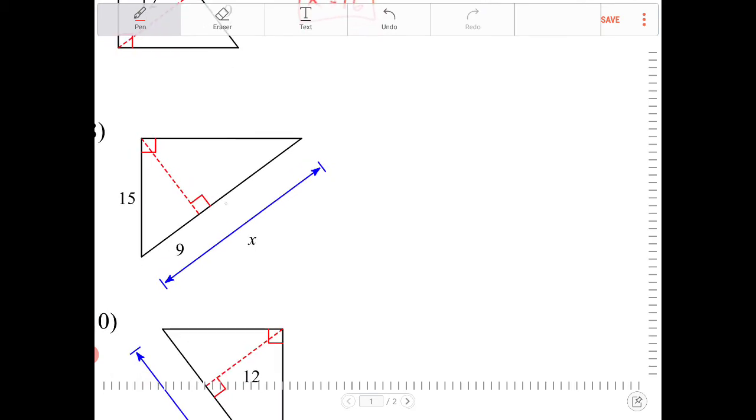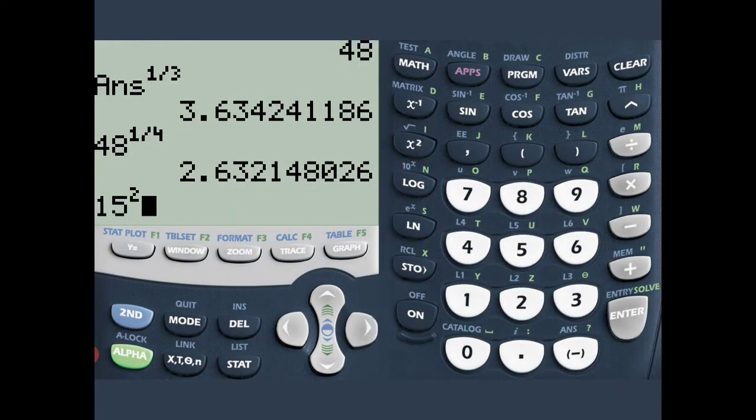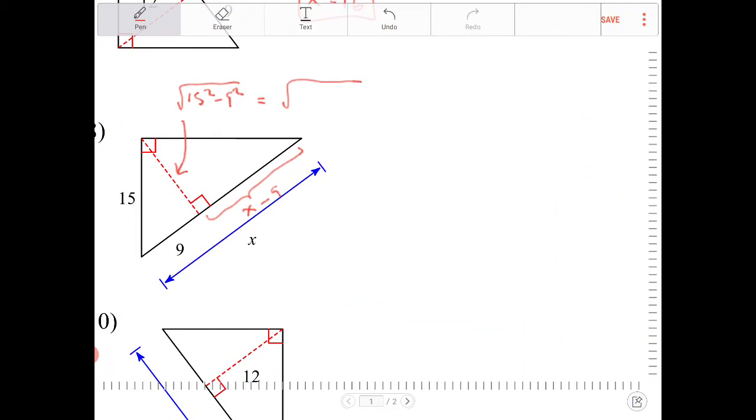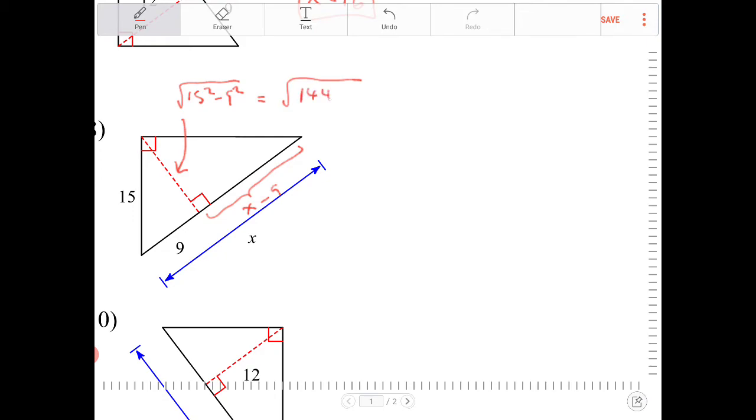This length over here is X minus 9, and this length over here is something. So I will need to use the Pythagorean theorem. That is the square root of 15 squared minus 9 squared. 15 squared minus 9 squared is 144, so that's 12. How could I not have seen this? This is a 3-4-5 triangle, of course. So this is going to be square root of 144, which is equal to 12.